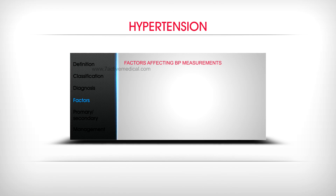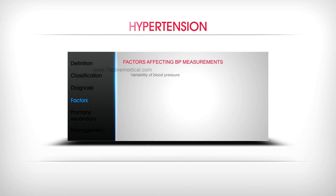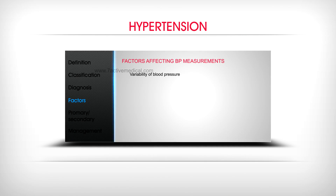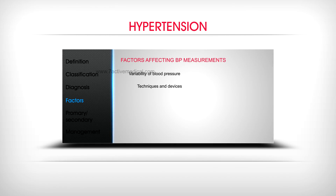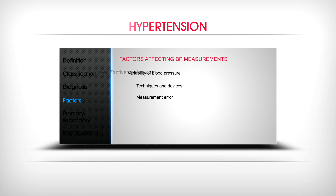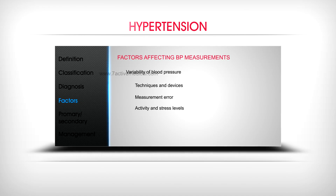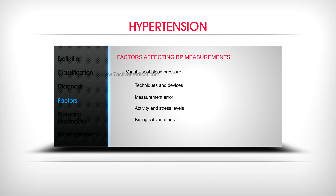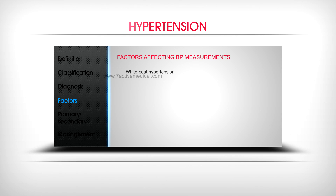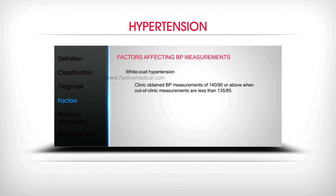Additional factors affecting BP measurements include variability of blood pressure, techniques and devices, measurement error, activity and stress levels, and biological variations. White coat hypertension refers to clinic-obtained BP measurements of 140/90 or above when out-of-clinic measurements are less than 135/85.